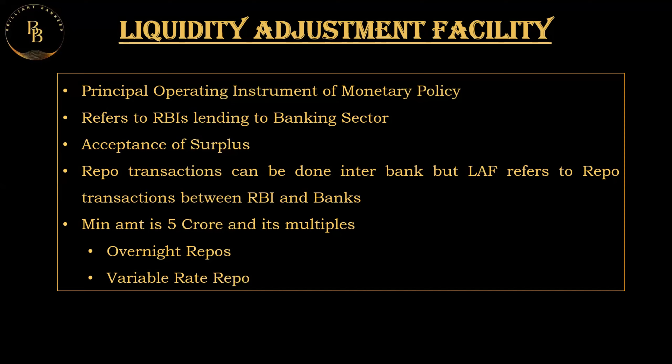Banks can participate in LAF auctions conducted by the RBI to manage short-term liquidity needs. The auctions are for a minimum amount of rupees 5 crore and always in multiples of that amount. By adjusting the repo and reverse repo rates, the RBI signals its monetary policy stance — an increase in the repo rate controls inflation by reducing money supply, while a decrease stimulates economic activity by making borrowing cheaper. CRR, SLR, and LAF are all used to control money in the market as per monetary policy.